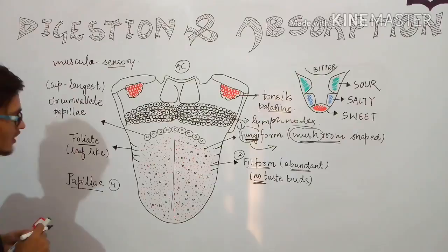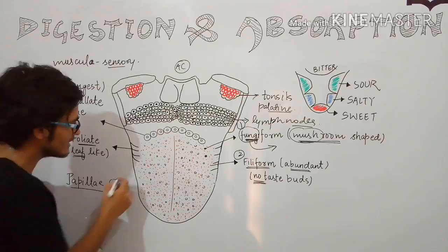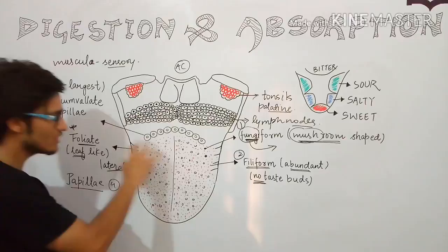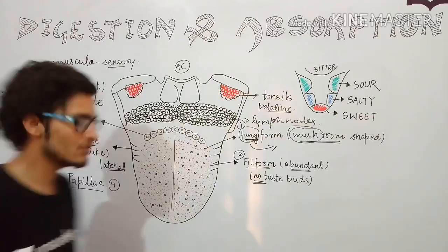The third type is foliate papillae. Foliate simply means leaf-like, as the name indicates. These are leaf-like in shape and are present on the lateral sides of the tongue. You can see the lateral folds on both sides of the tongue — these are the foliate papillae, leaf-like in shape.